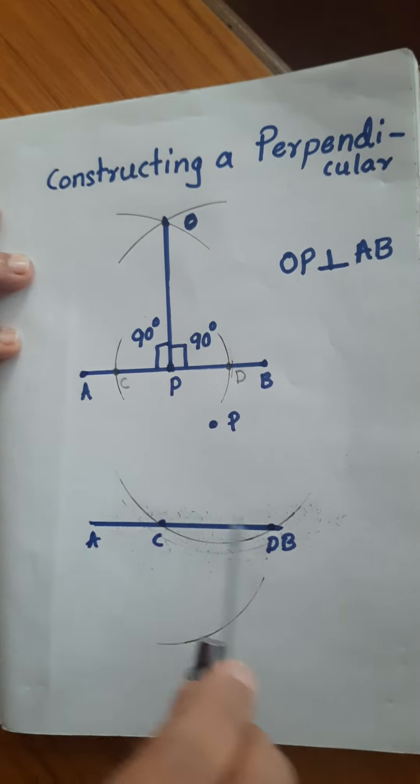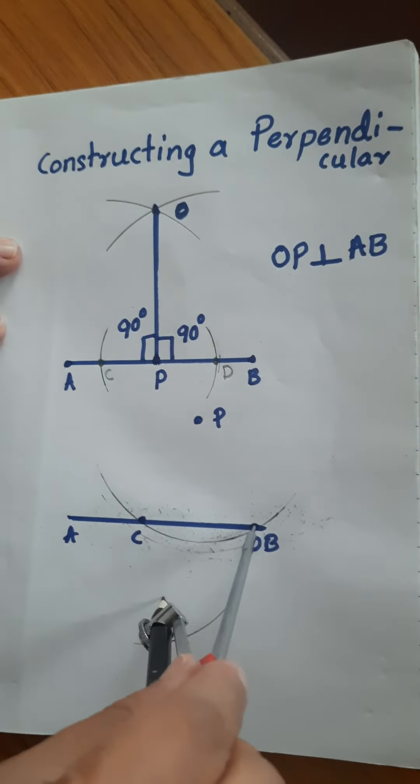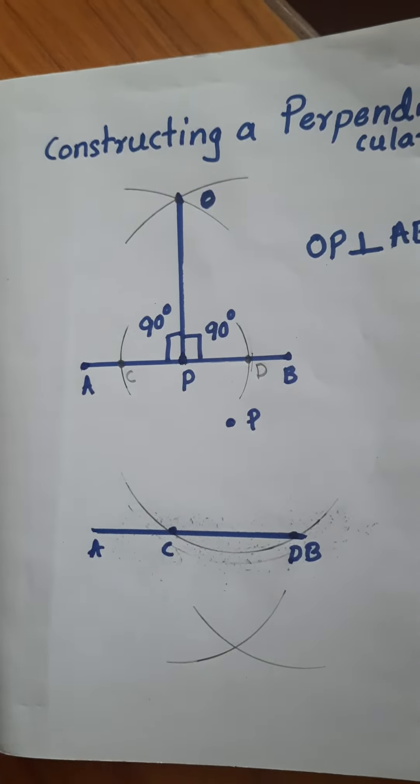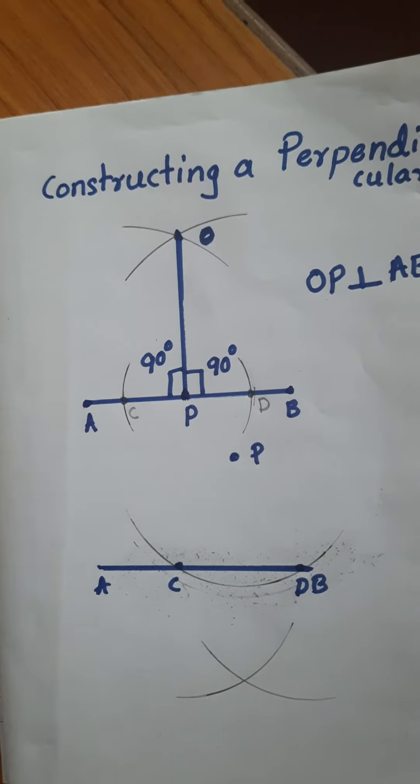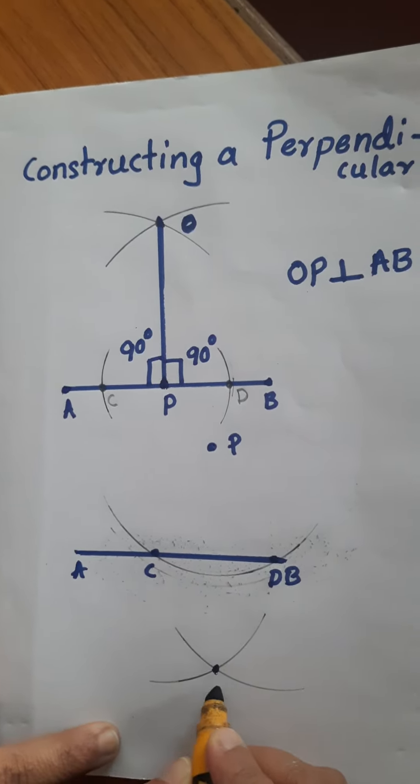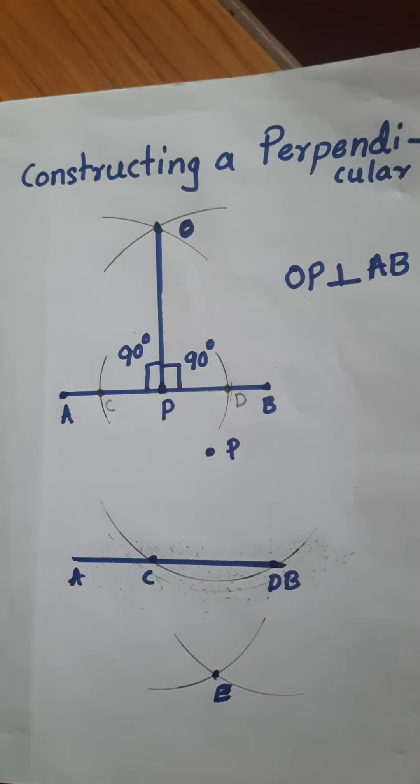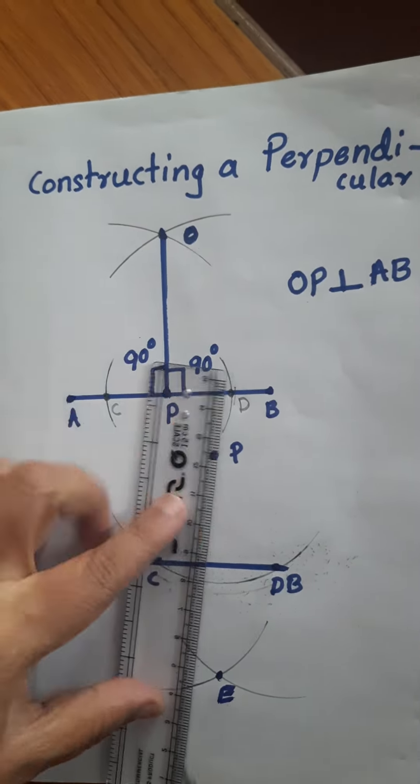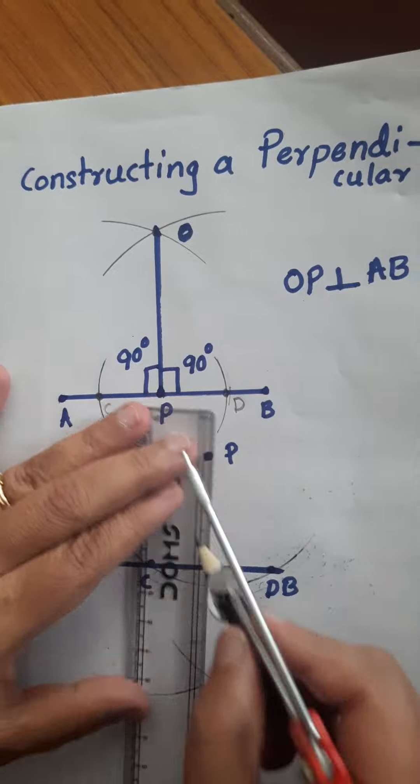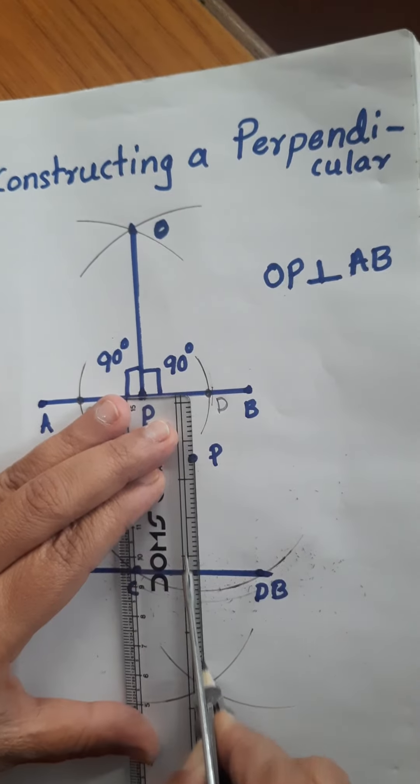Now, from C we will draw an arc below, and from D we will cut that previous arc. The point formed we will name E. Now from the P point we will join E.